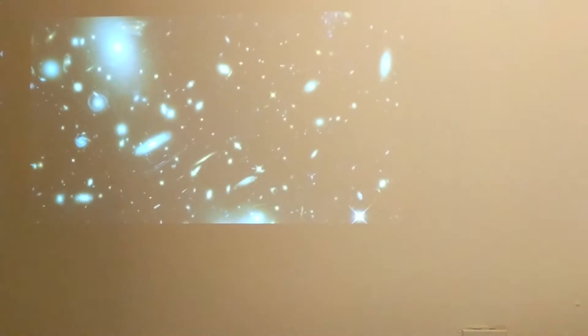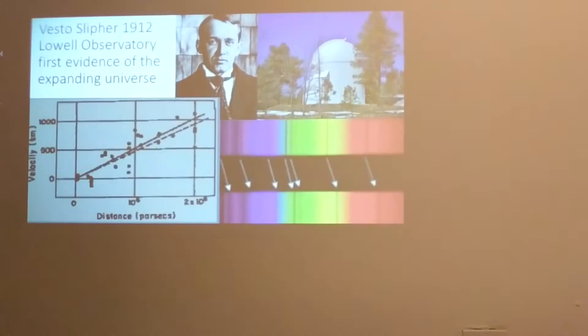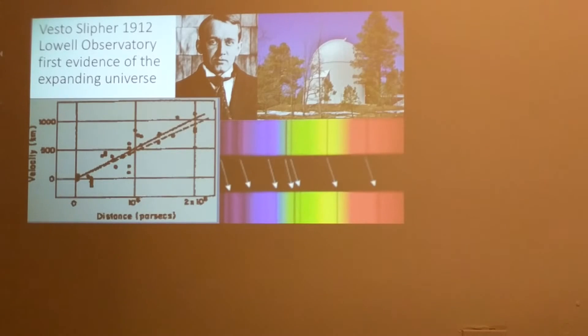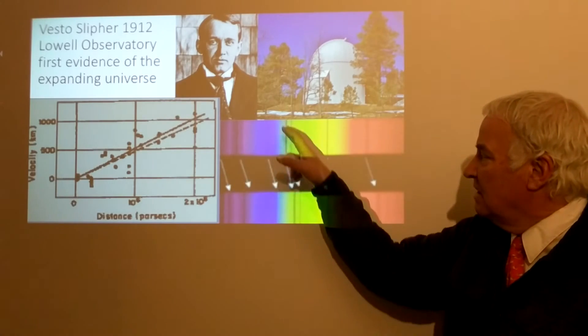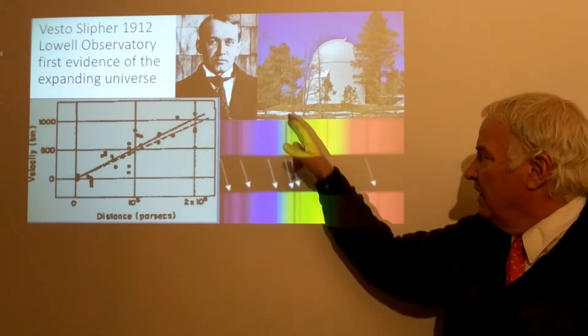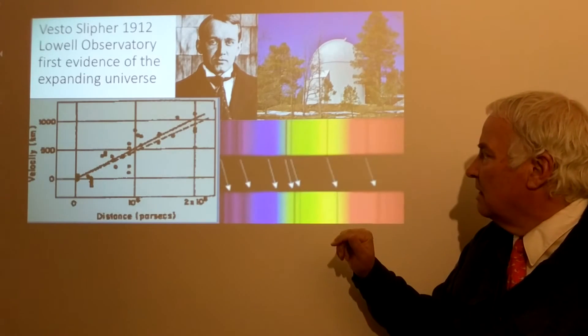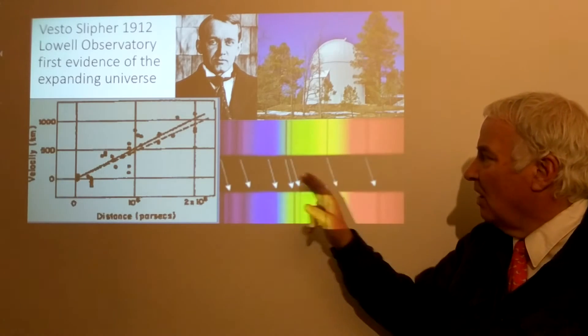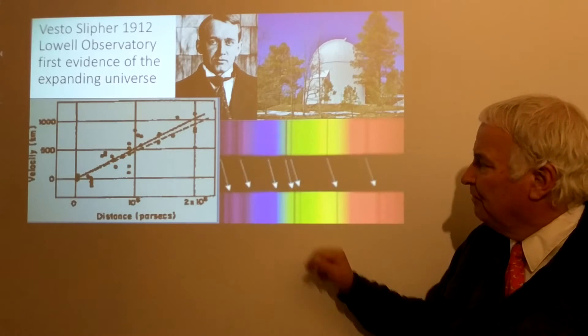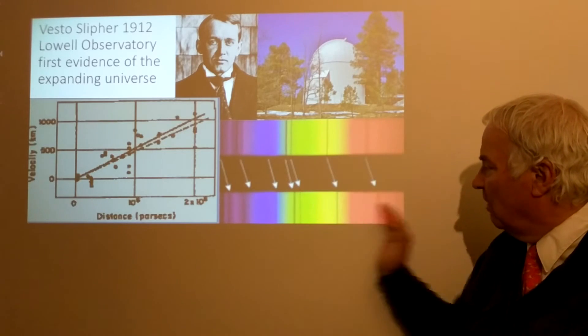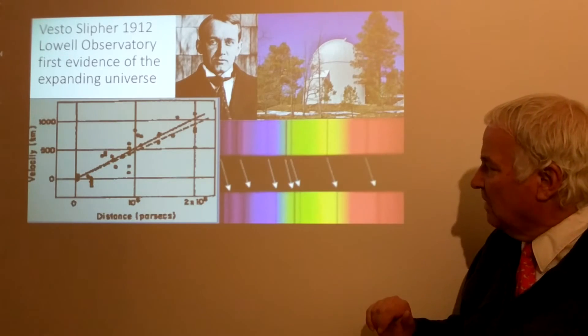If we look back in time, Vesto Slipher in 1912 made the first discoveries of evidence for the expanding universe. At the Lowell Observatory in Arizona, he took spectra of galaxies. You can take a spectrum of a galaxy just like you can take a spectrum of a star—you put the light through a prism and get the rainbow of colors and see the lines that correspond to the elements and transitions taking place. He found that all the galaxies had a shift in the positions of the lines, all shifted over to the red end of the spectrum.